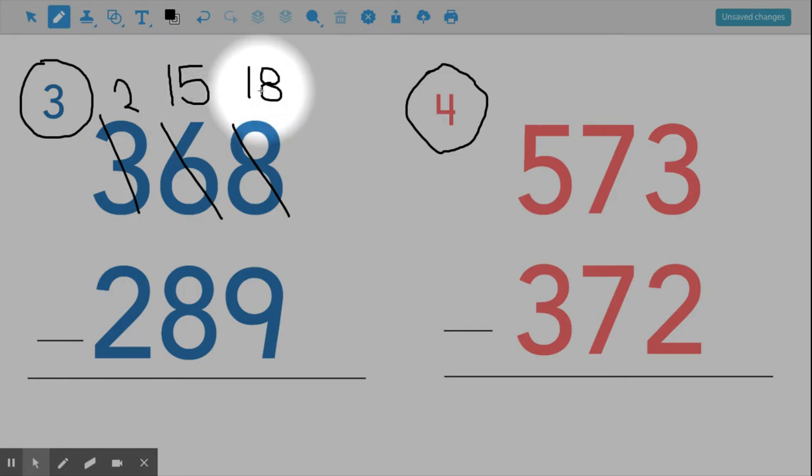All right, so now we can start in our ones column. Eighteen take away nine. Now if you'd like to count backwards you can, or you can start at nine and count up to eighteen. I like to start with the small number and count up to the big number. So I've got nine, ten, eleven, twelve, thirteen, fourteen, fifteen, sixteen, seventeen, eighteen. That is nine.